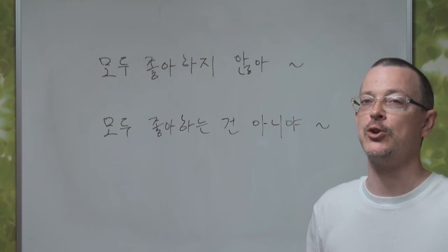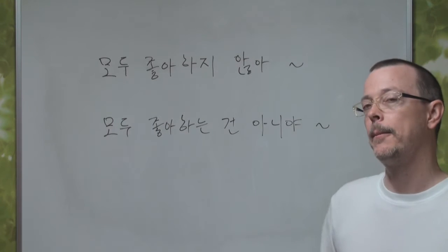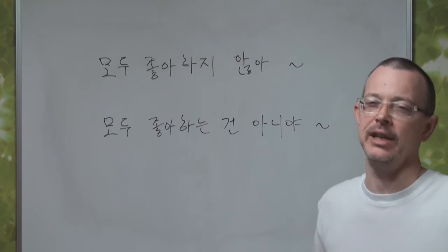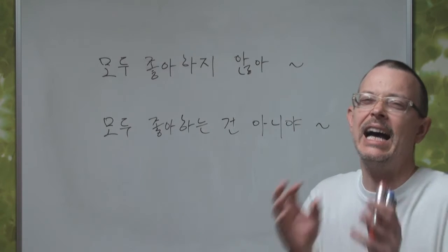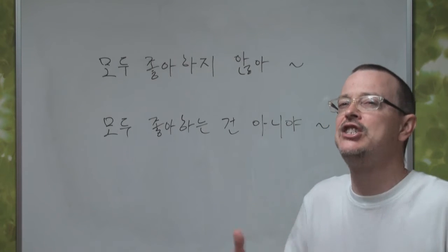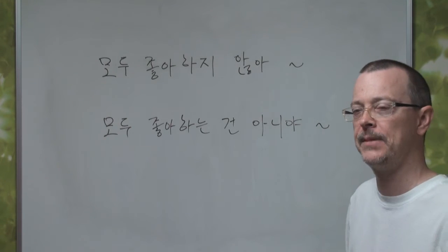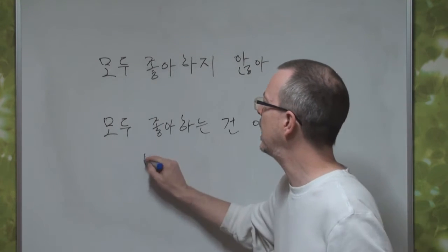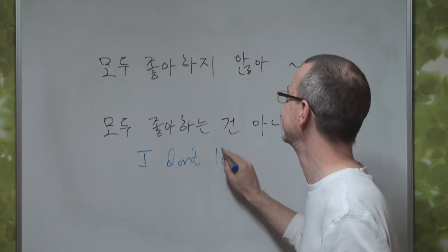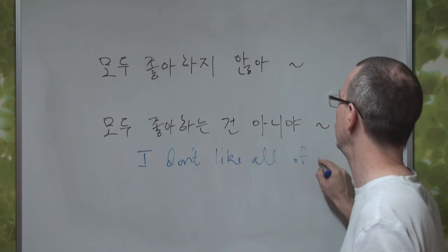That's a good question. This is very confusing. Well, 'I don't like all of it' — I like some of it, but I don't like all of it. 어떤 거일까요? 네 맞아요 — 두 번째. 첫 번째. 'I don't like all of it.'